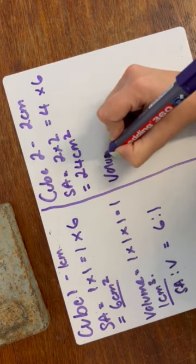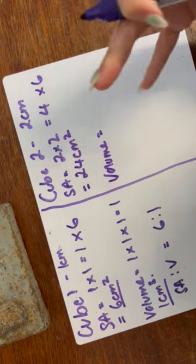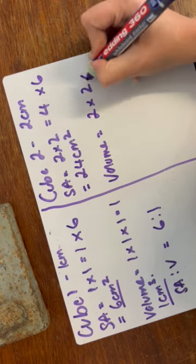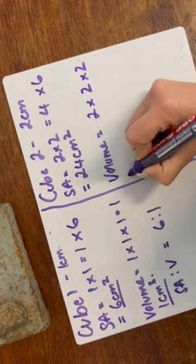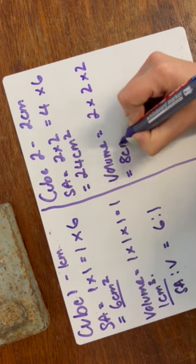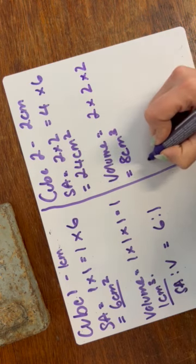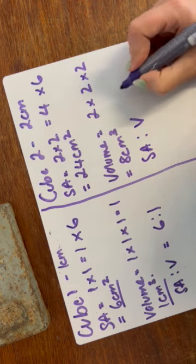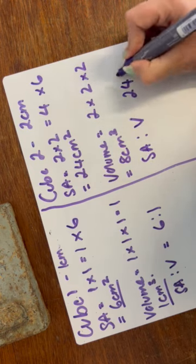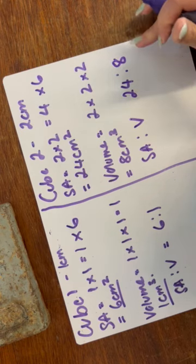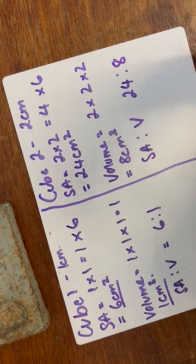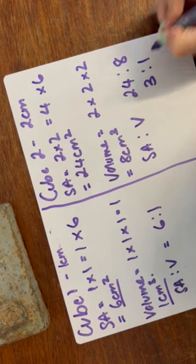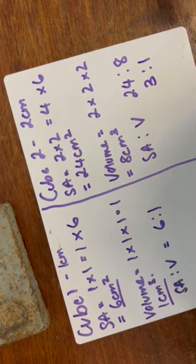The volume of my cube, again, how much space there is inside that cube, is two times two times two, and that is eight centimeters cubed. Now, again, if I express that as a ratio of surface area to volume ratio, I will do that as 24 to eight. If I divide that by the other to get it expressed as something to one, I get three to one. If I divide 24 by eight, I get three.